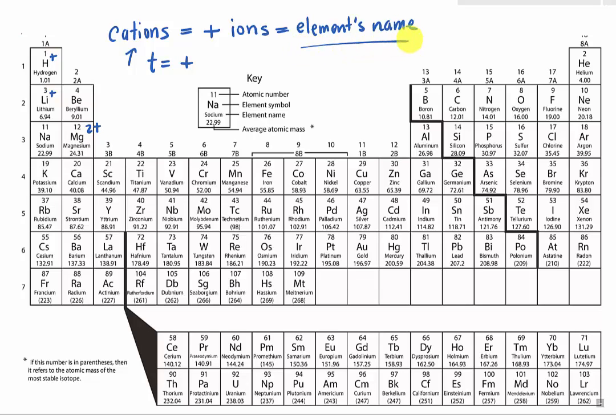Isn't that easy? But there is one tricky part, and that is for the elements in group B. Because sometimes in group B, some of the elements will have more than one type of ions.